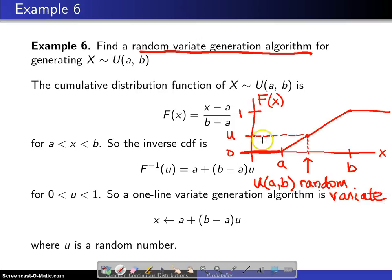The mathematics behind putting together the random variate generation algorithm is you set the cumulative distribution function equal to u and you solve this equation for x. And when you solve this for x you need to multiply by b minus a and then add a. And you will get this equation right here as what is known as the inverse cumulative distribution function of a random variable which is uniformly distributed between a and b.